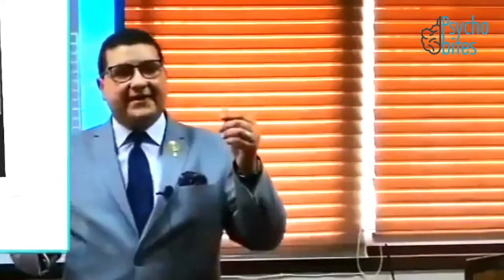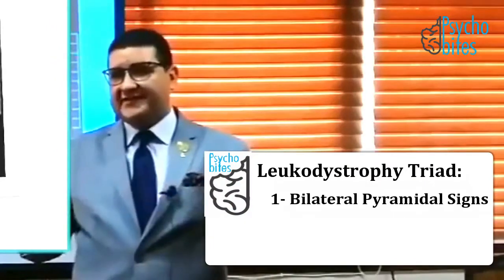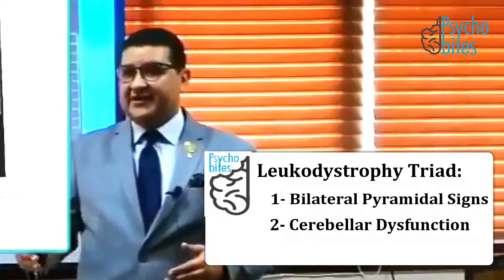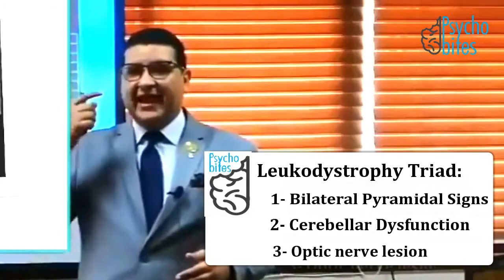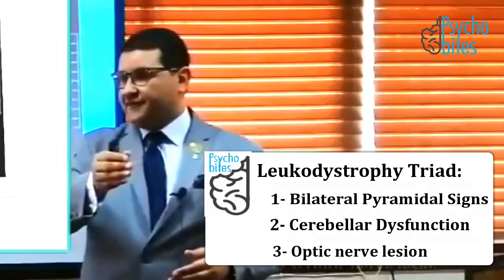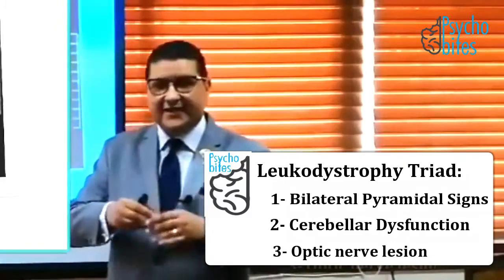There are three major subtypes of the leukodystrophies, presenting with affection of the white matter: long tract bilateral pyramidal signs, cerebellar dysfunction, and affection of the optic nerve with progressive loss of vision. These are the three triads.